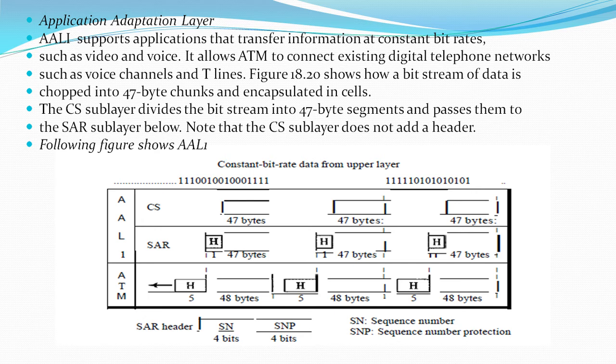The following figure shows AAL 1. The sequence number (SN) is a 4-bit field that assigns a sequence number to order the bits; the first bit is sometimes used for timing, which leaves 3 bits for sequencing. Sequence Number Protection: the second 4-bit field protects the first field. The first 3 bits automatically correct the SN field, and the last bit is a parity bit.